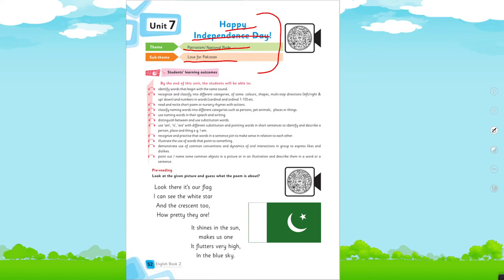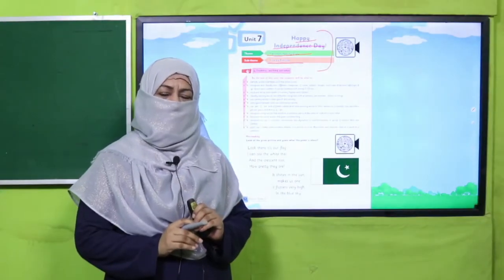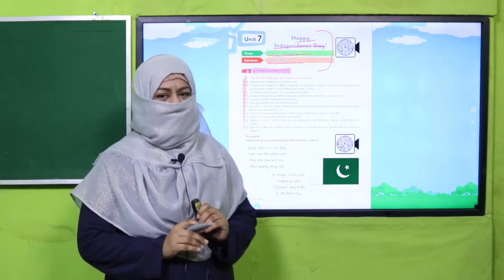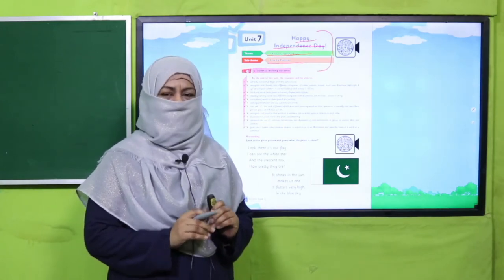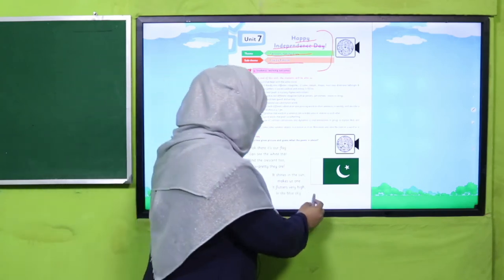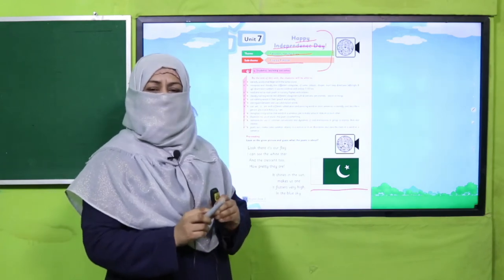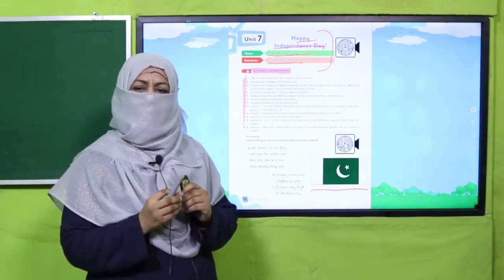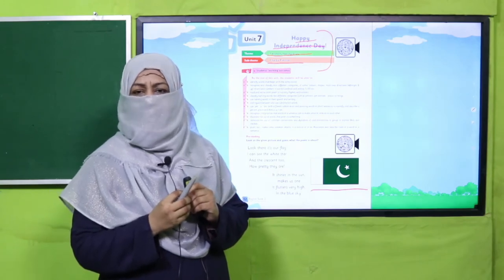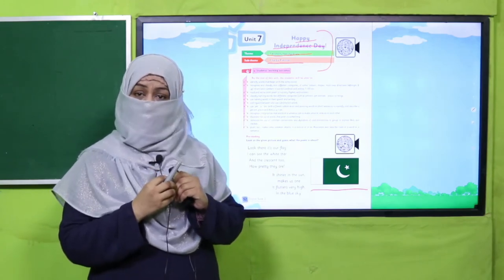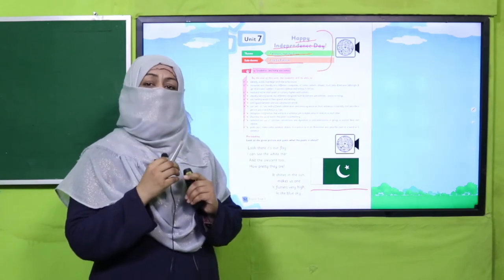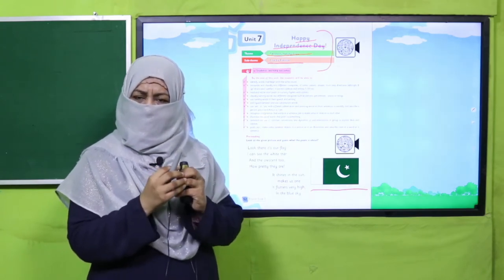Happy Independence Day — what does it mean? It means Youm-e-Azadi Mubarak. This day refers to August 14, which is celebrated in Pakistan as Independence Day.